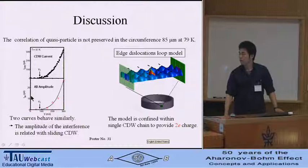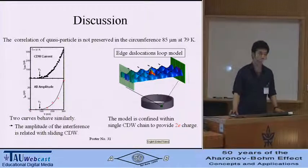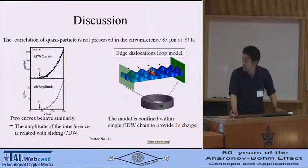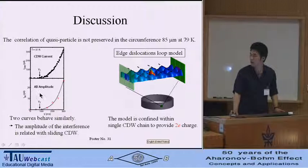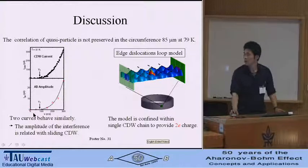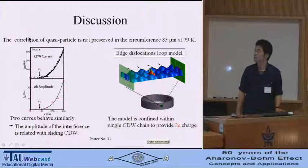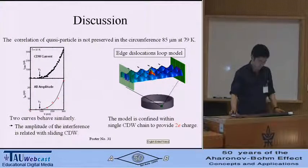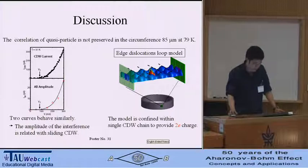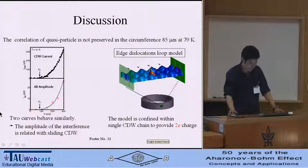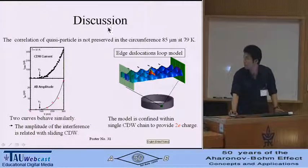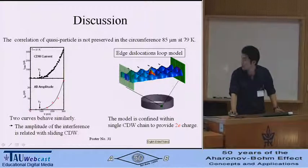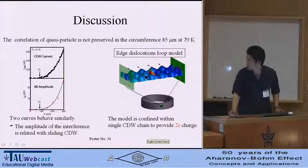In the case of normal fluctuation with free electrons, the line becomes linear as a function of increasing voltage. But the two curves behave similarly. In addition, the correlation of cross-particle is not preserved in our samples. For this reason, the h/2e oscillation is related to sliding CDW. Thus, we propose a CDW soliton model confined into a CDW chain, carrying a charge of 2e.